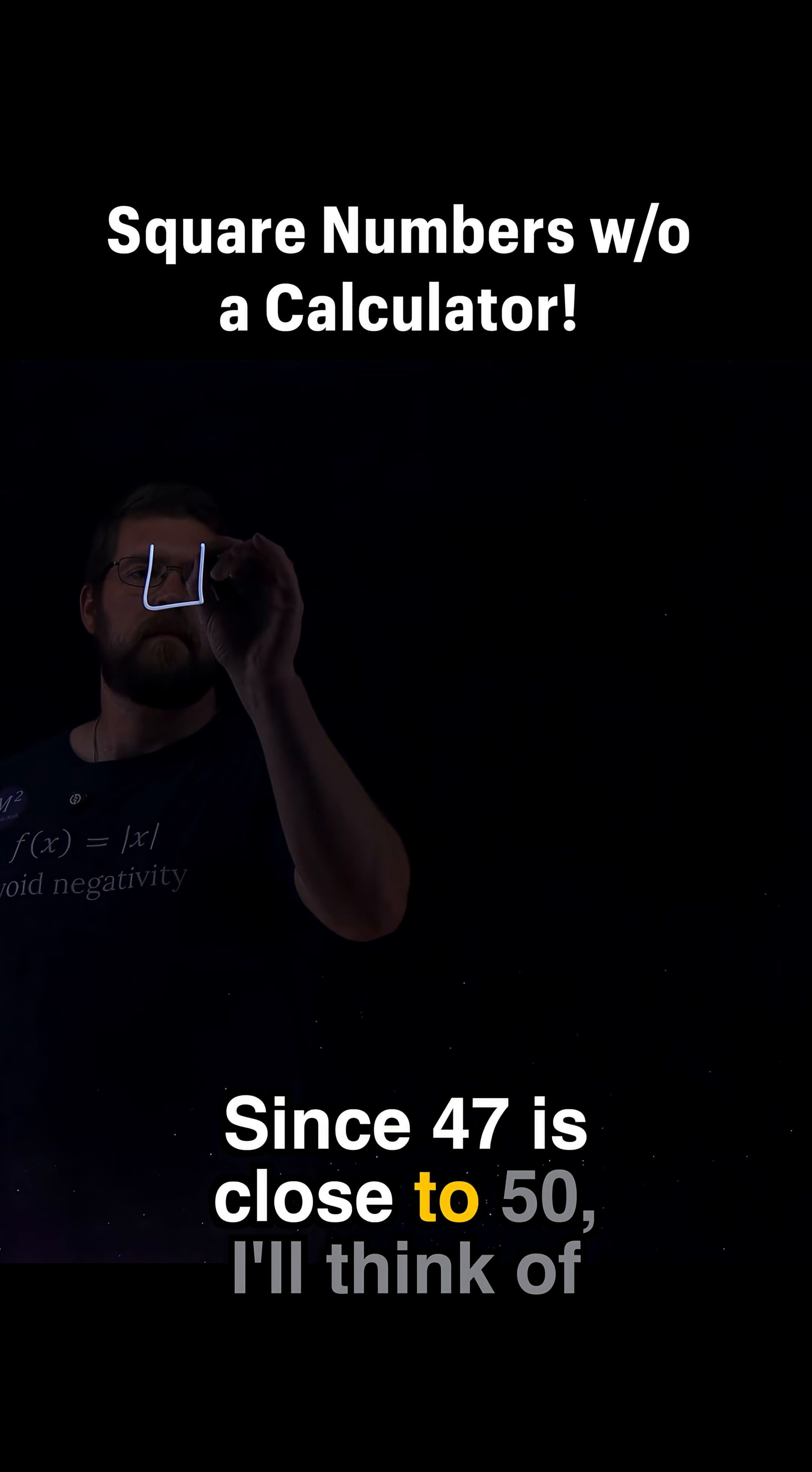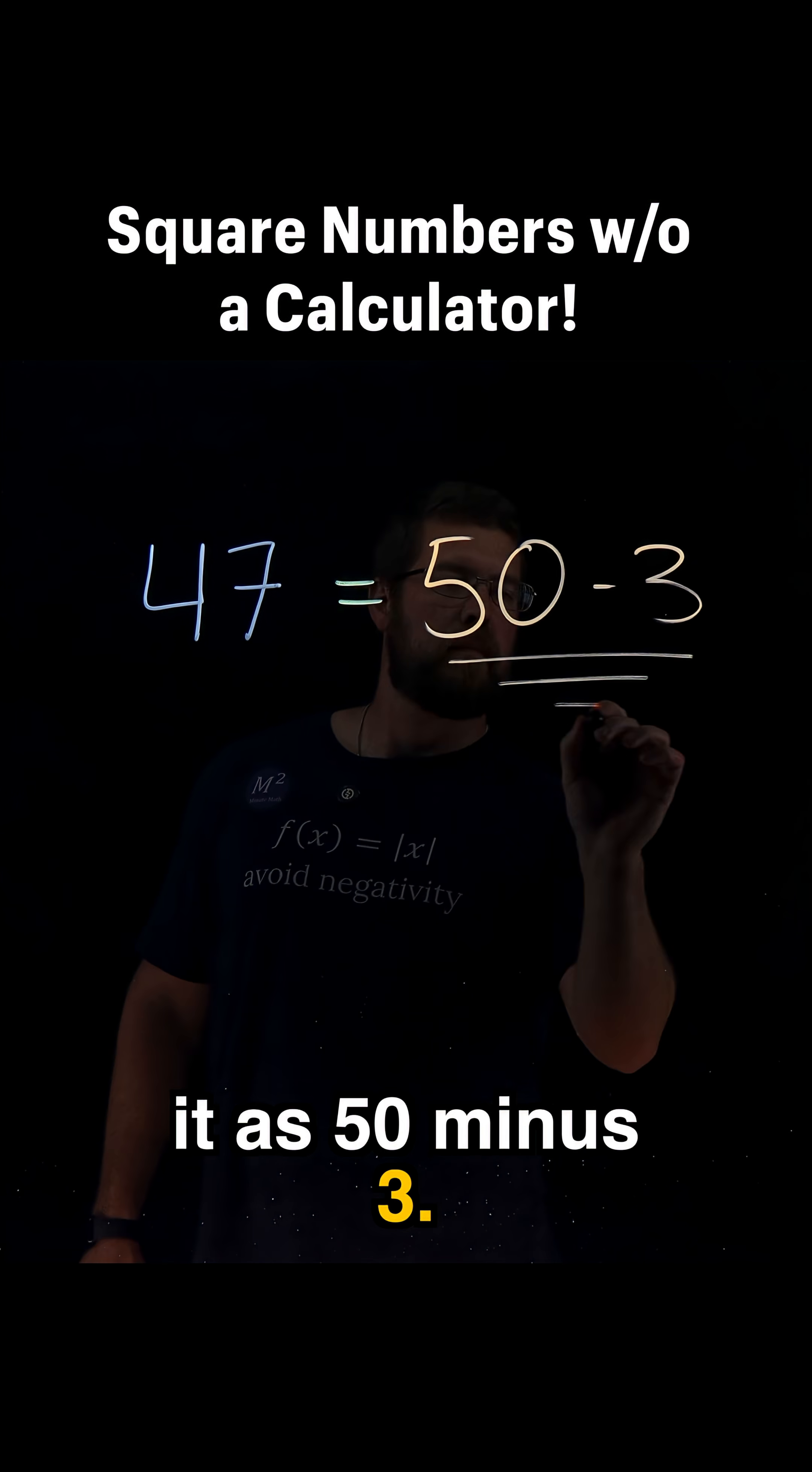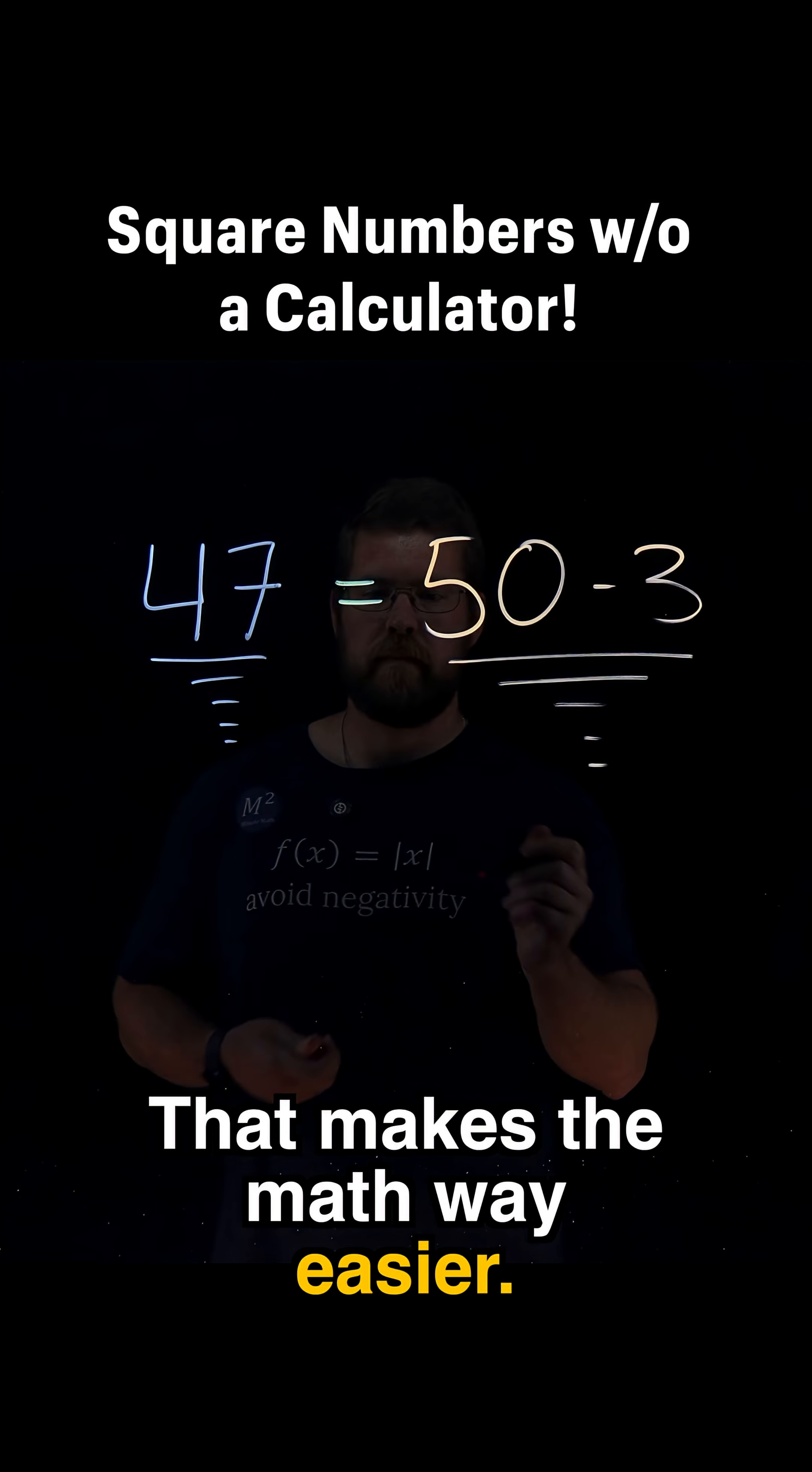Since 47 is close to 50, I'll think of it as 50 minus 3. That makes the math way easier.